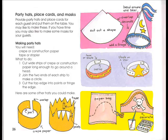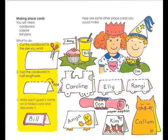Making place cards: You will need cardboard, scissors, and felt pens. What to do: 1. Cut the cardboard to the size you want. 2. Fold the cardboard in half lengthways. 3. Write each guest's name on the folded card and decorate. Other place card designs can also be made.